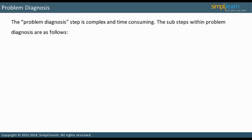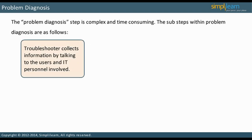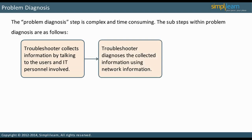As discussed earlier, the problem diagnosis step is complex and time-consuming. There are five sub-steps within problem diagnosis. The first sub-step is to collect information. As the problem report often does not contain sufficient information, the troubleshooter collects additional information by talking to the users and the IT personnel involved. The next sub-step is to examine the collected information. In addition to information collected from people within an organization, the troubleshooter uses network information to diagnose the problem, such as baselines collected when the network is operating normally.